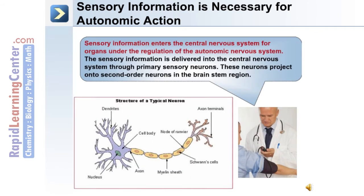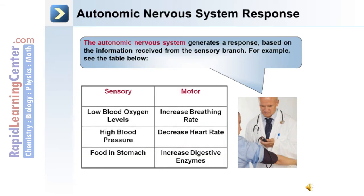Sensory information is necessary for autonomic action. Sensory information enters the central nervous system from organs under the regulation of the autonomic nervous system, delivered through primary sensory neurons. These neurons project onto second-order neurons in the brainstem region. The autonomic nervous system then generates a response based on the information received. For example, low blood oxygen levels generate an increase in breathing rate; high blood pressure, a decreased heart rate; food present in the stomach, an increased digestive enzyme and gastrointestinal tract action.